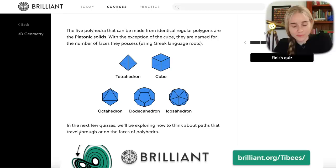And this course goes on to explore how to think about paths that travel through or on the faces of these polyhedra. If you would like to try out Brilliant for yourself and explore the rest of the course, you can head to brilliant.org slash tibbies and that link will be on screen and down in the description.